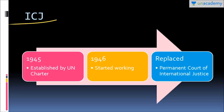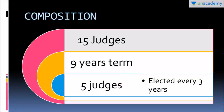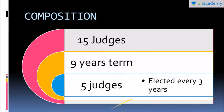The International Court of Justice started working in 1946 and is also known as the World Court. If we talk about the composition of this particular judicial organ, it has a bench of 15 judges, and each of these judges has a term of 9 years. Five judges are elected after every 3 years - similar to Rajya Sabha where one-third of members retire every two years; here one-third retire every three years, so elections take place after every 3 years.